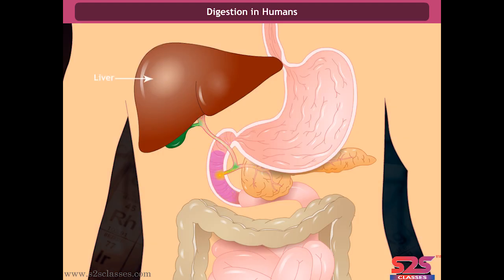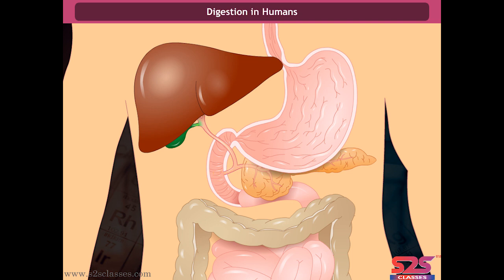The small intestine receives secretions from the liver and the pancreas in the form of bile and pancreatic juice. The wall of the small intestine also secretes juices. The main function of the liver is to secrete bile juice, which is stored in a sac-like structure called the gallbladder. Bile takes part in the digestion of fats. The pancreas secretes pancreatic juice, which digests carbohydrates and proteins by breaking them into simpler substances.